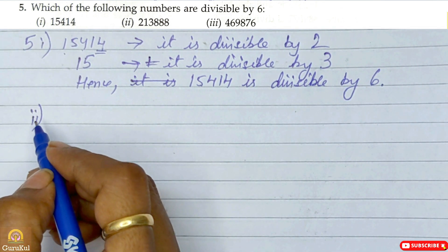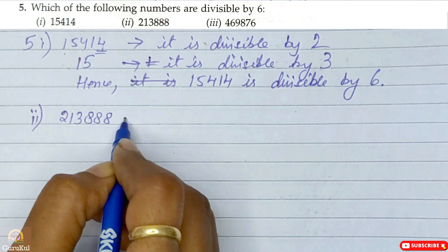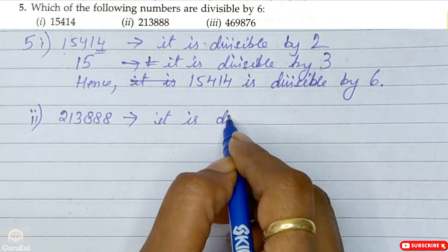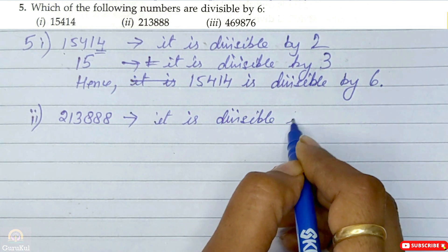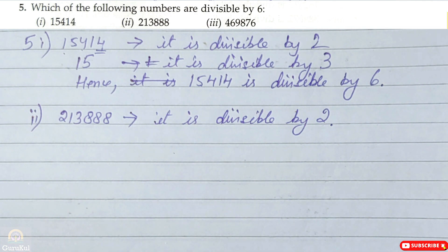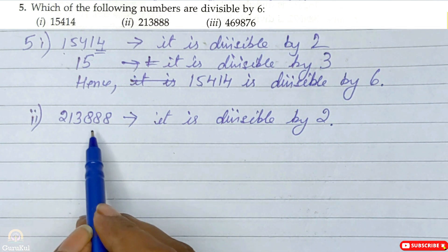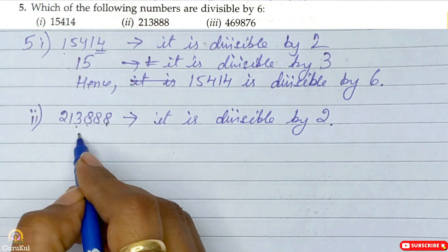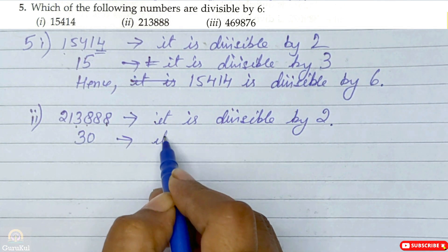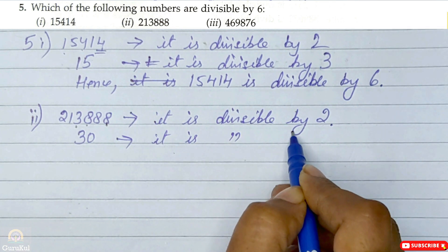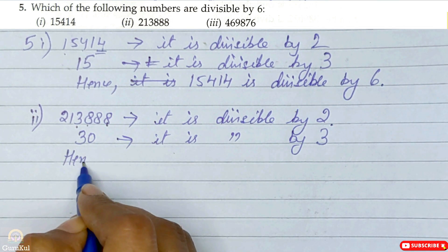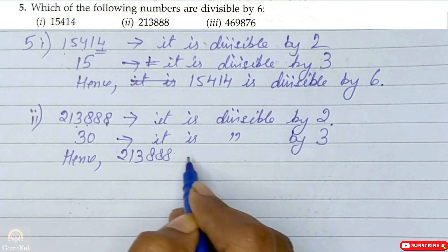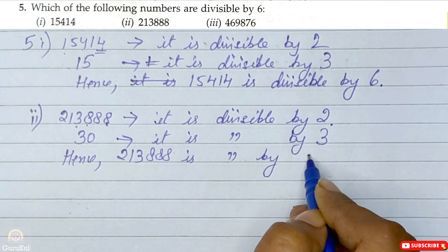Second one: the number is 2, 1, 3, and triple 8 — that is 213888. The last digit is 8, which is even, so it is divisible by 2. For divisibility by 3, we add all digits: 3 eights are 24, plus 3, plus 2, plus 1 — the sum is 30. Since 30 is divisible by 3, the number 213888 is divisible by 6.